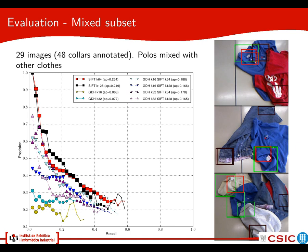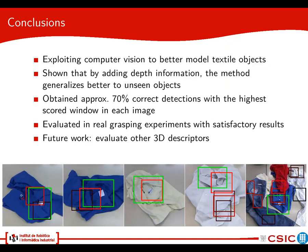As conclusions, we have exploited computer vision to get better models of textile objects and perform informed grasping based on parts of the textile object. We have shown that by adding depth information to our representation we are able to generalize better to unseen objects. We obtained about 70% correct detections with the highest score window only, which is a very good result given the complexity of the task. We have also evaluated this method with real grasping experiments with a robotic arm with very satisfactory results. As future work, we would like to evaluate or propose other 3D descriptors to improve the performance of the combination of SIFT and 3D descriptors.